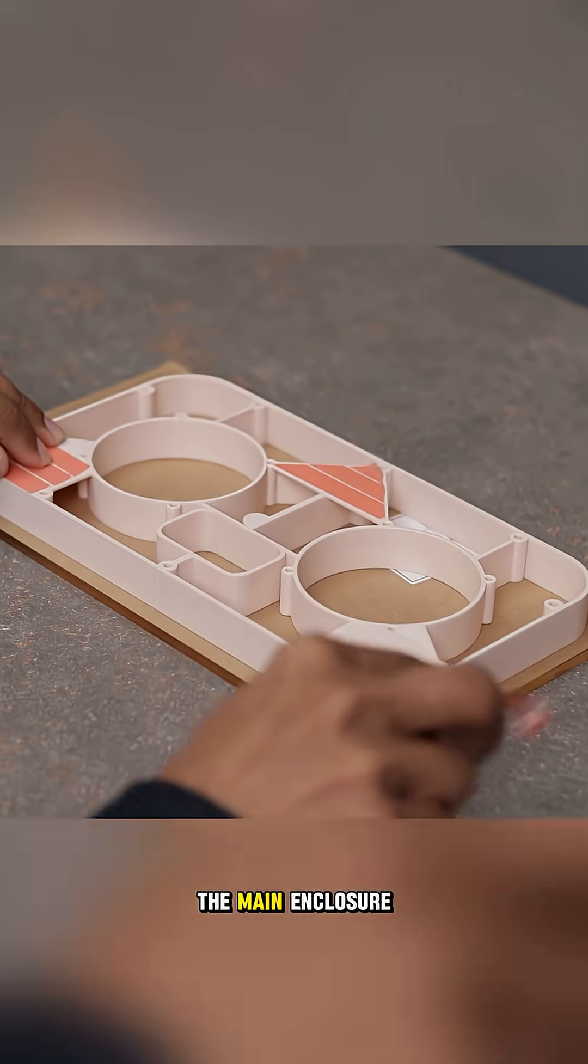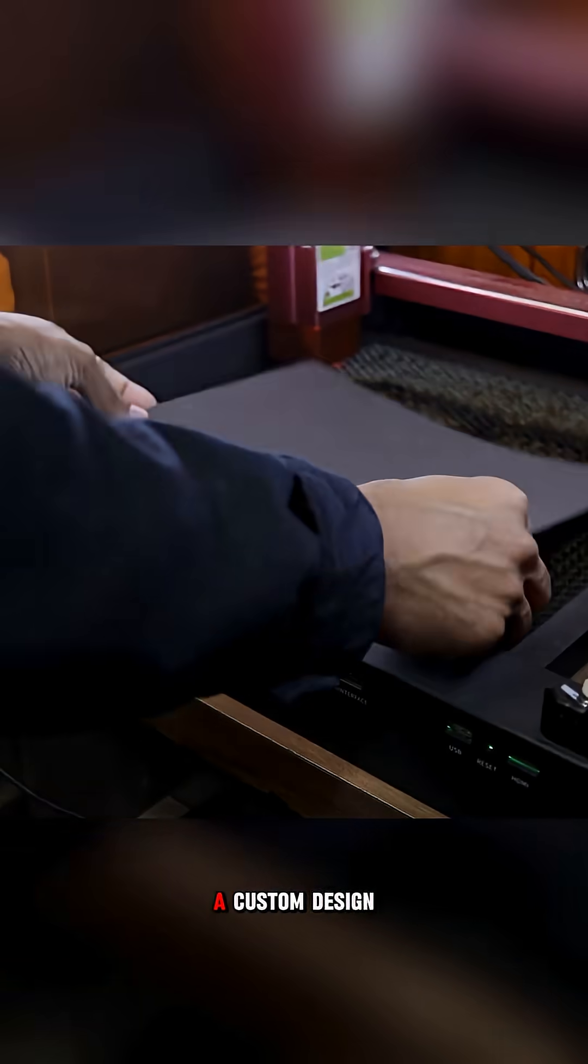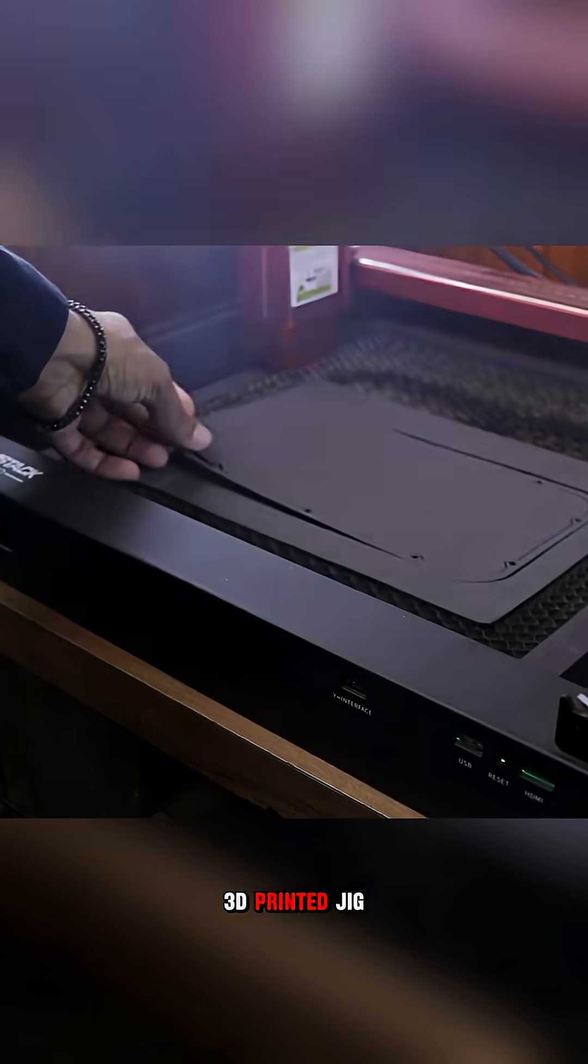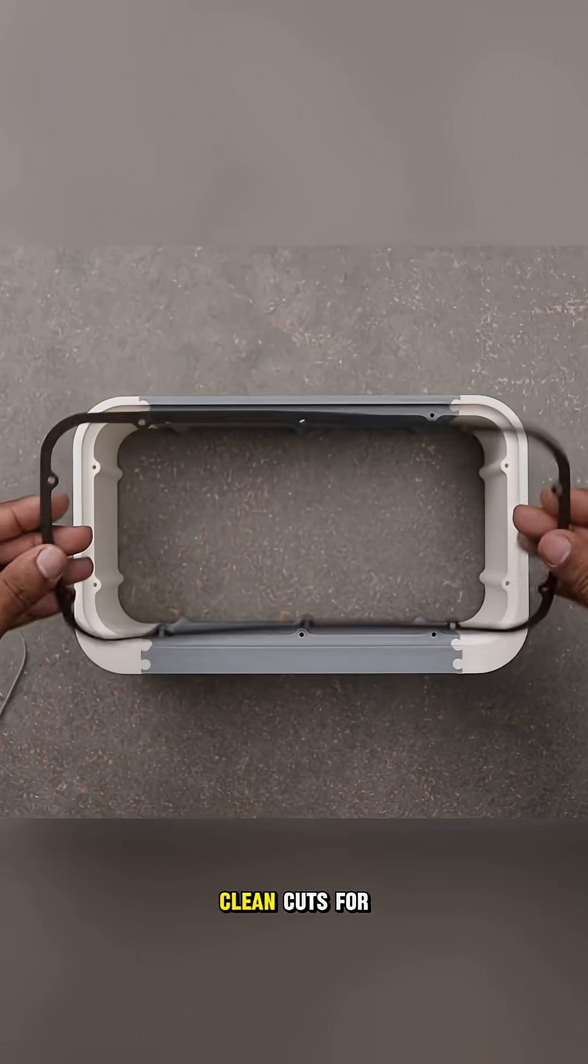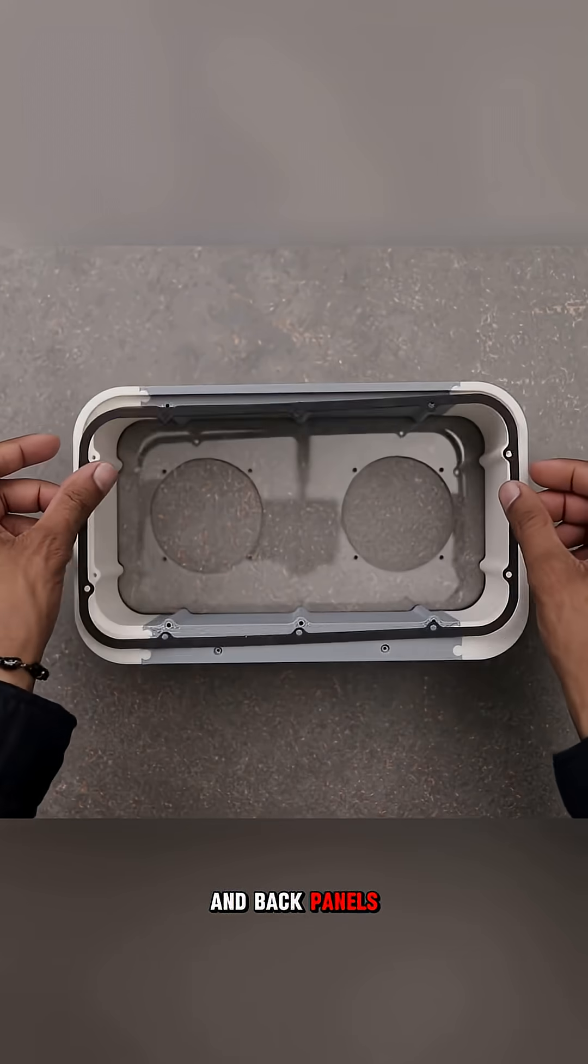After 3D printing the main enclosure pieces, the builder used a custom-designed 3D printed jig to achieve precise, clean cuts for the 5mm clear acrylic front and back panels.